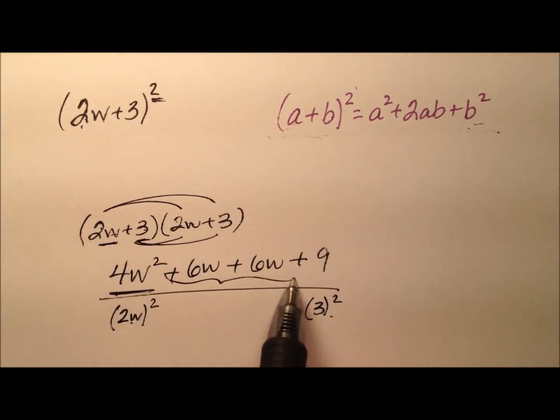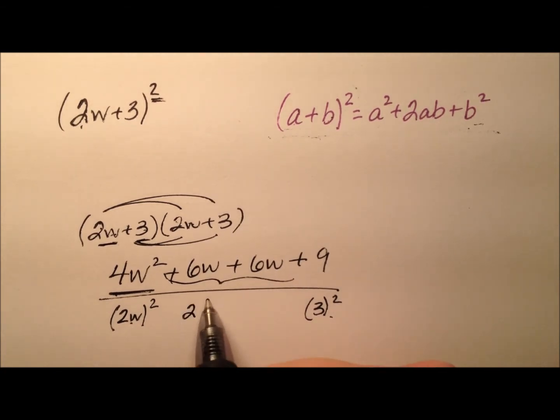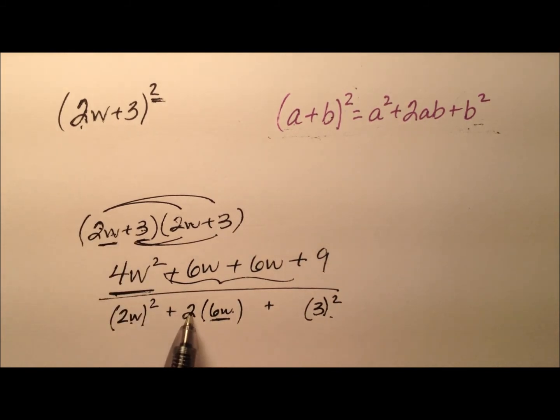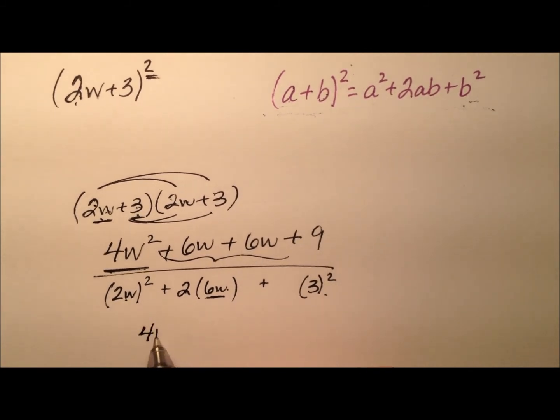And these middle two terms, they're both the same, so you could say twice 6w. Well if you have 2 times 6w, where did the 6w come from? Well it's because we multiplied the 2w and the 3. So it's twice the product of the 2 terms. So what we'll end up with is 4w squared plus 12w plus 9. So that's what that product will look like.